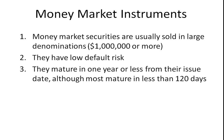I want to take a look at some of the different money market instruments. Now, money market is a bit of a misnomer because we usually think of cash as money, but here we're talking about securities. Money market securities are usually sold in large denominations of a million dollars or more. They have very low default risk and they mature in one year or less from their issue date, although most mature in less than 120 days. So when we talk about the money market, what we're really talking about is short-term securities.